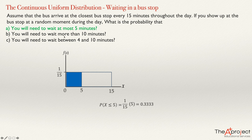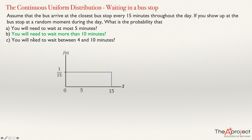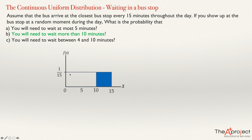Let's answer the second question. What is the probability that you need to wait more than 10 minutes? The value 10 will be somewhere on the graph, and the thing you need to do is find the area of the rectangle to the right of 10.